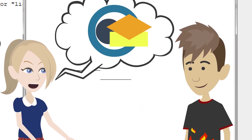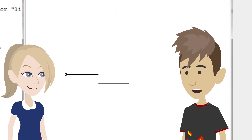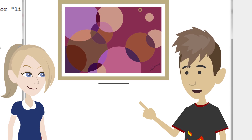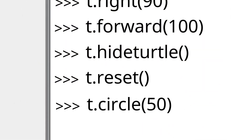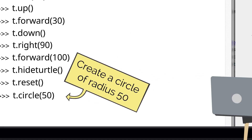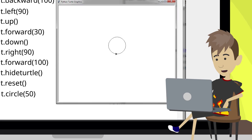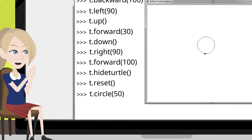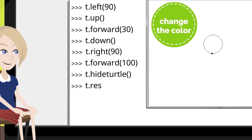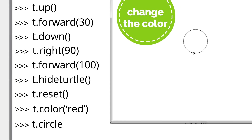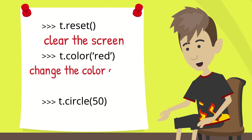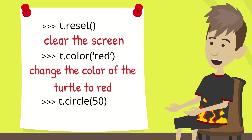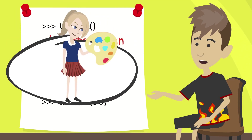Are straight lines all that I can draw with Python? Not at all. You can even draw circles. Let me clear the screen first, then I'll show you. This will create a circle of radius 50. You can change this value depending on how big you want the circle to be. If I press the return key, see what happens. Wow, that is so cool! Can I change the color? Sure. You just add the following lines. The first line will clear the screen. The second line will change the color of the turtle to red. You can use any other color you like instead of red, too.